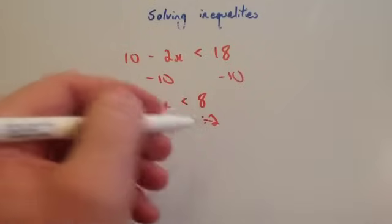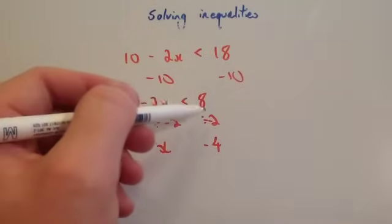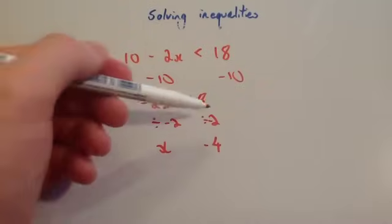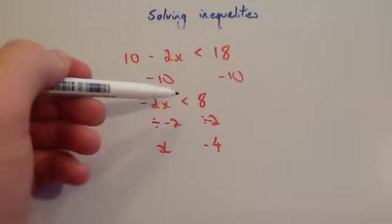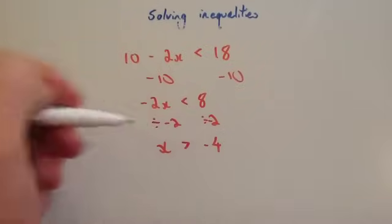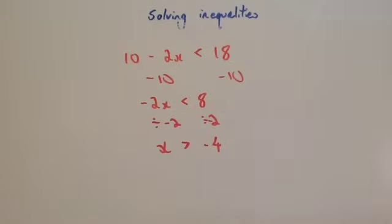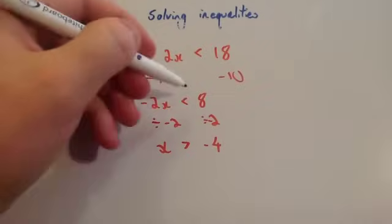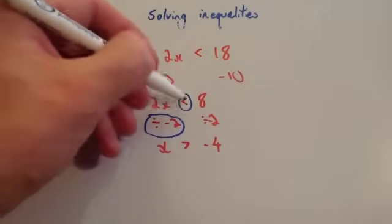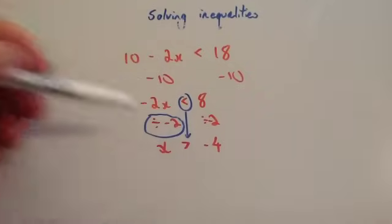8 divided by minus 2 is minus 4. Now remember: whenever you multiply or divide by a negative, you have to change the inequality sign. So instead of less than, we're going to make it greater than. So your answer is x is bigger than minus 4. The main point here is whenever you're dividing by a negative or multiplying by a negative, you've got to change your inequality sign around — rather than being less than, it becomes bigger than.